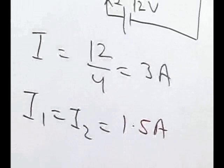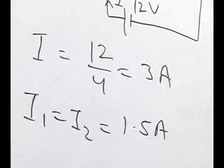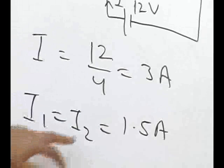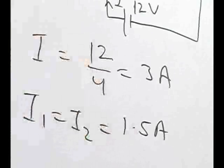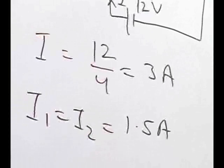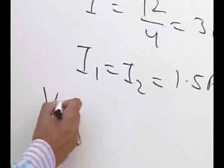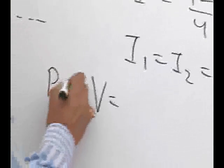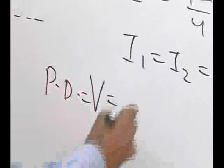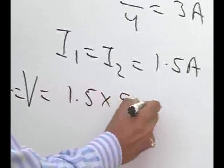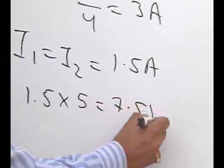What we need to find out is the potential difference across the 5 ohm resistance. Hence, the current flowing through 5 ohm resistance is 1.5, the resistance is 5 ohms. So the potential difference V is equal to 1.5 into 5. The final answer is 7.5 volts.